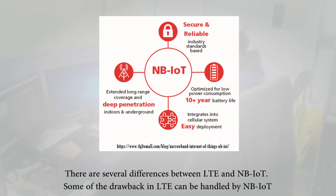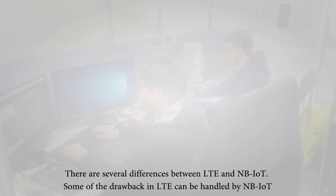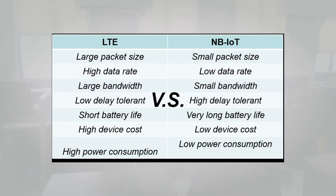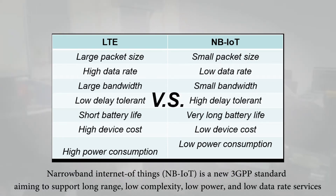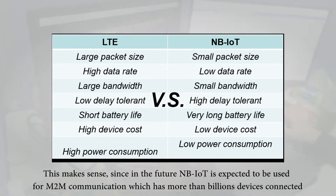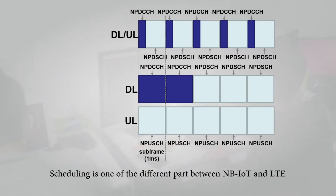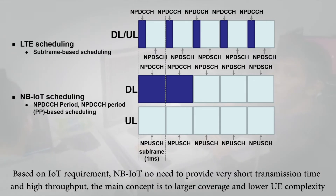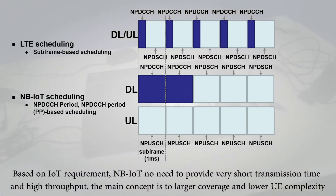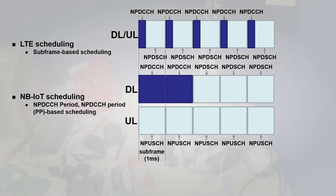There are several differences between LTE and NB-IoT. Some drawbacks in LTE can be addressed by NB-IoT. Narrowband Internet of Things is a new 3GPP standard aiming to support long-range, low-complexity, low-power, and low-data-rate services. This makes sense since NB-IoT is expected to be used for M2M communication, which involves more than billions of connected devices.